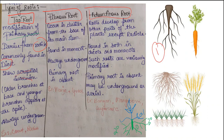Tap roots are always underground. The most common examples are carrot and radish — the part of carrot and radish that we eat is basically your tap root. It is the major root, and on the sides fine hairs and secondary roots arise. This type of root, where the primary root is dominant and clearly visible as compared to other roots, is called tap root.